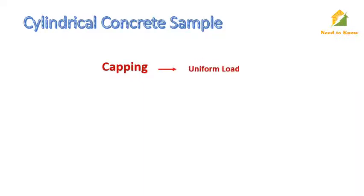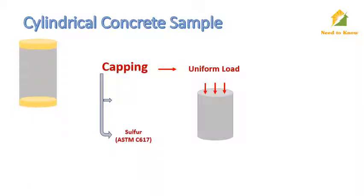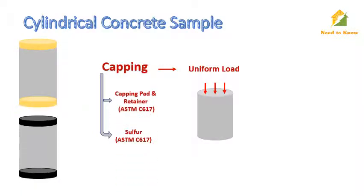First, we discuss and calculate compressive strength for cylindrical sample. In the case of a cylinder, capping is needed before subjecting to load to ensure uniform load transferring in the sample. Two methods are used for capping: the first one is capping with sulfur, and the second is the capping pad and retainer.